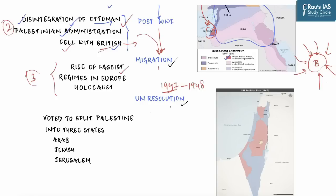The British decided to establish a proper state that the world would recognize as Israel — a nation state for Jewish people. The United Nations Security Council passed a resolution voting to split the earlier Palestinian region into three states: one Arab state, one Jewish state, and the third being the city of Jerusalem. This UN resolution was passed in 1947 and is known as UN Resolution Number 181.